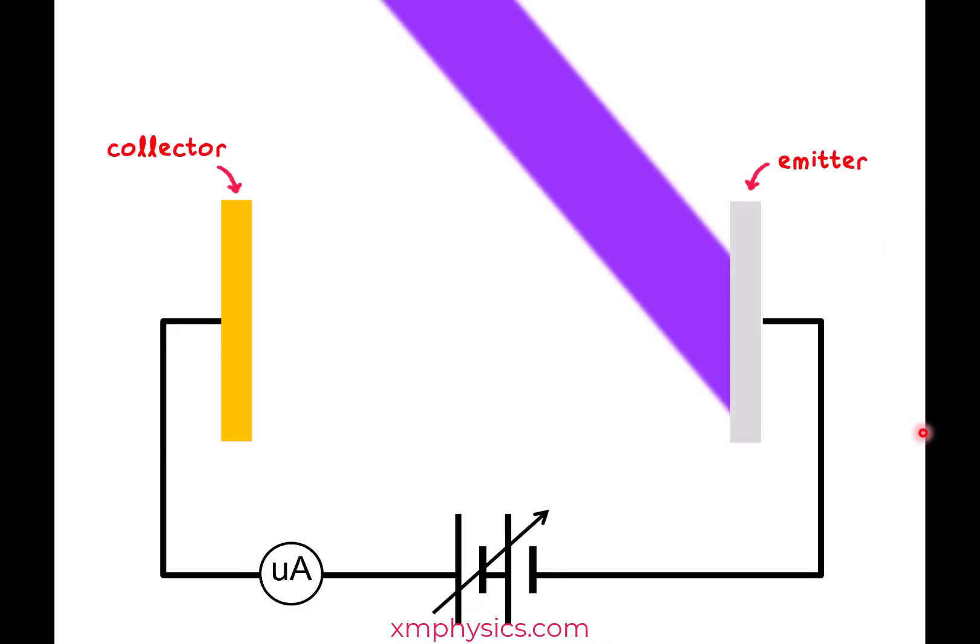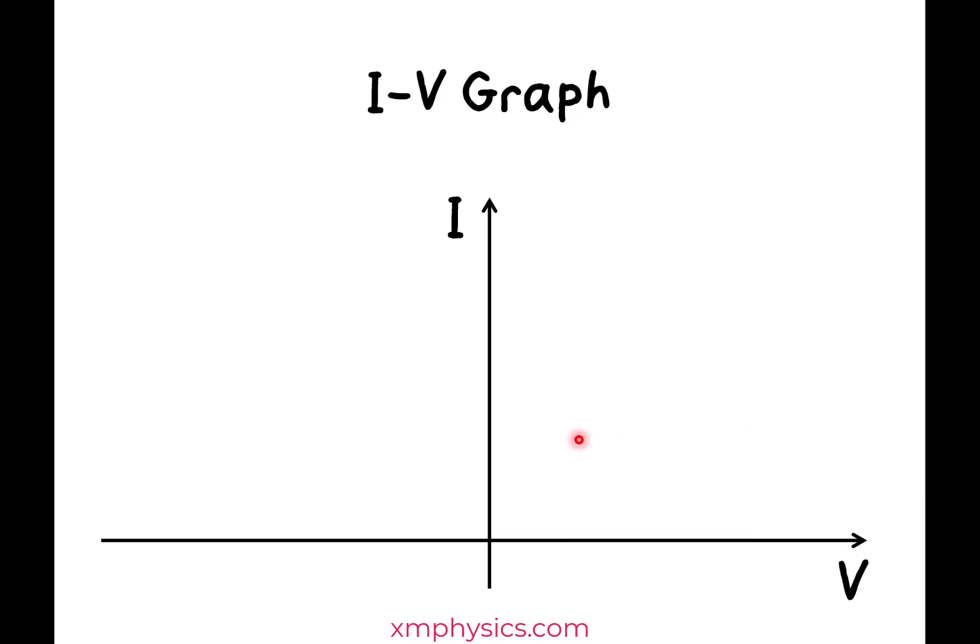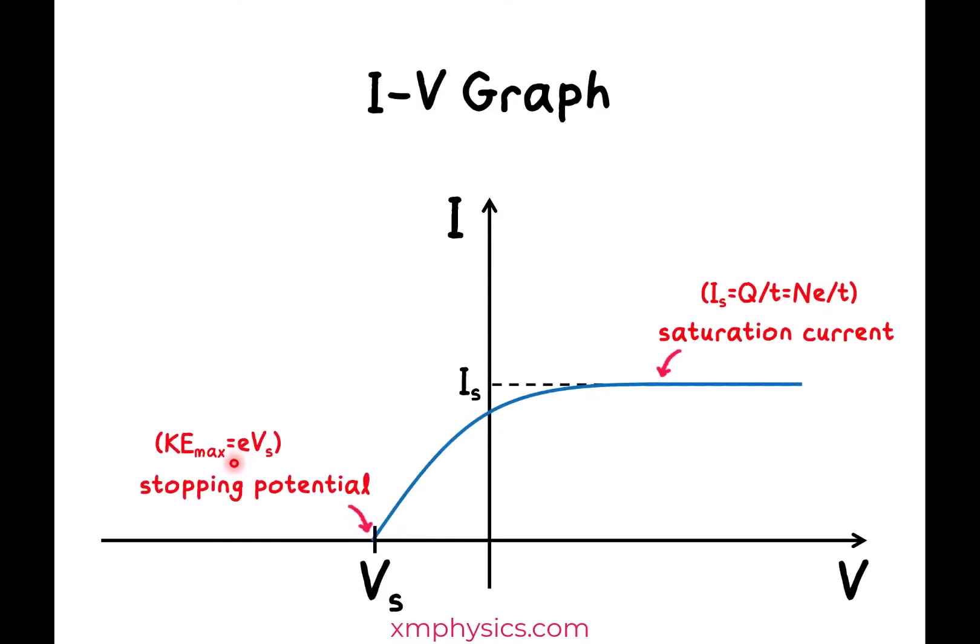Hello, in the previous video we have described the experimental setup for photoelectric effect. We have discussed how the saturation current allows us to calculate the rate of emission while the stopping potential allows us to calculate the maximum KE of the photoelectrons. So what kind of experiments did the physicist conduct?